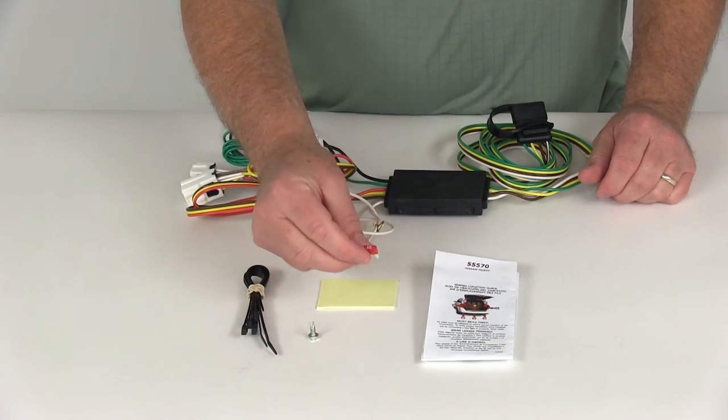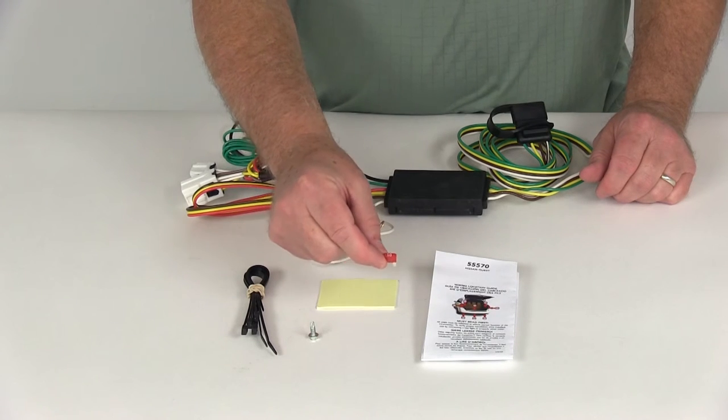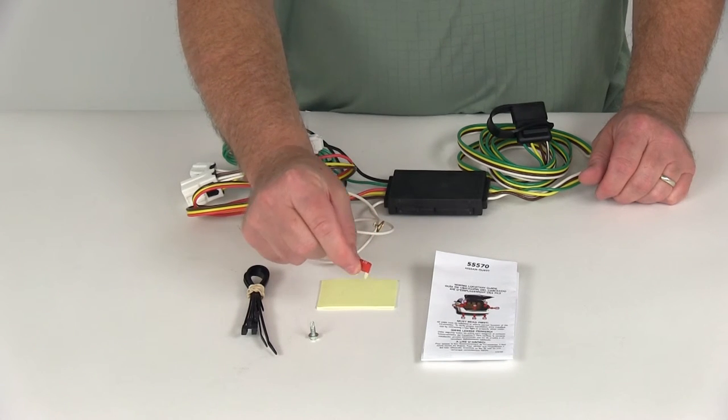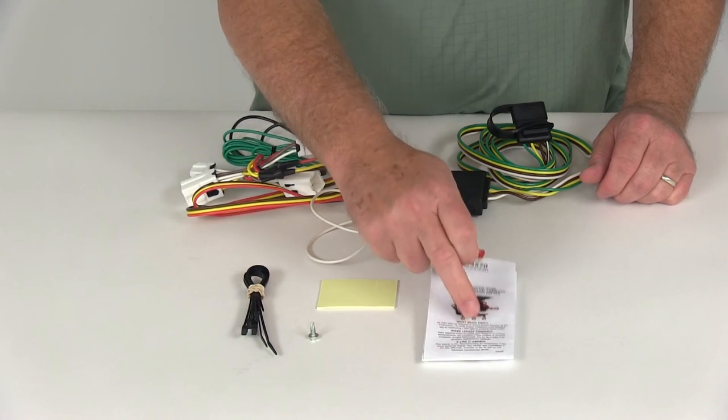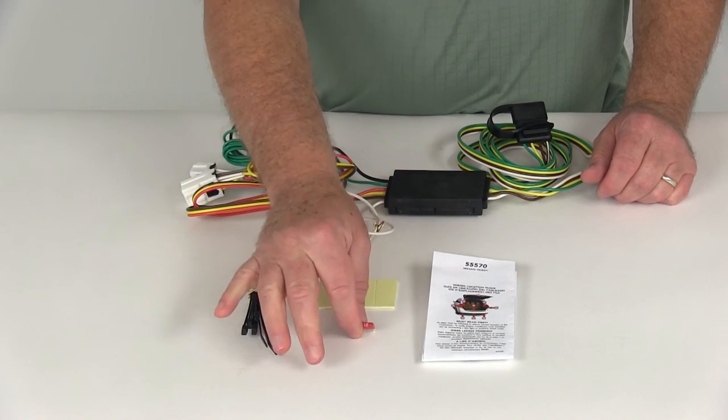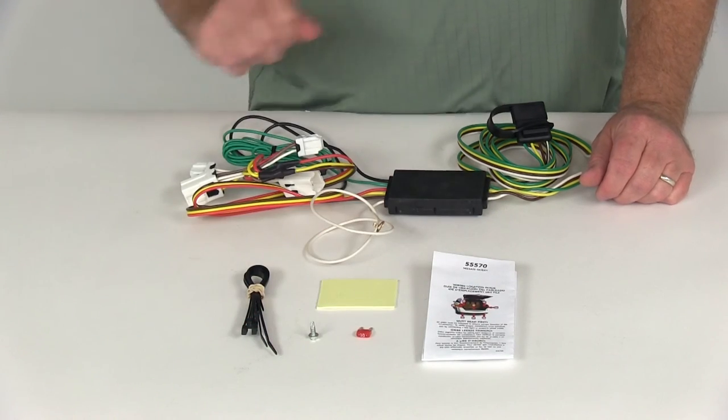Now there is one last thing, you do need to install this 10 amp fuse into your fuse box at the front of the vehicle. And there'll be a location if you look in your owner's manual. Also in your instructions here it'll tell you where to put this fuse in the correct location.